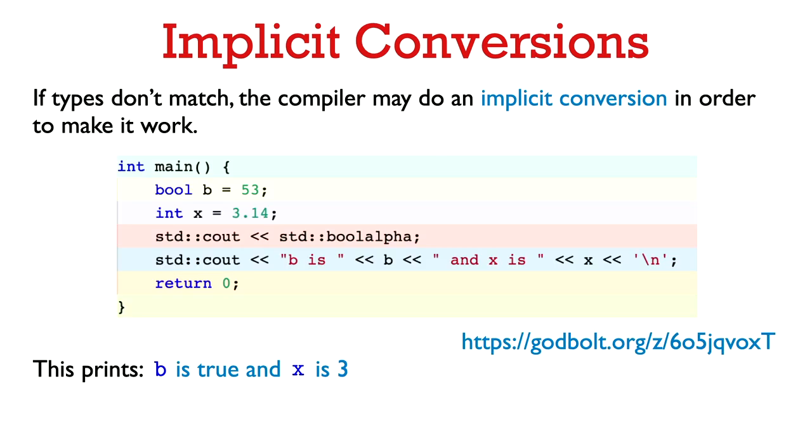So implicit conversions can happen in initialization as well. So for example, here we say a Boolean b equals 53. Again, the compiler is not going to complain. This will compile just fine. And it's going to convert 53 to the value true. And likewise, on the second line, int x equals 3.14. That's going to initialize x with the value 3.